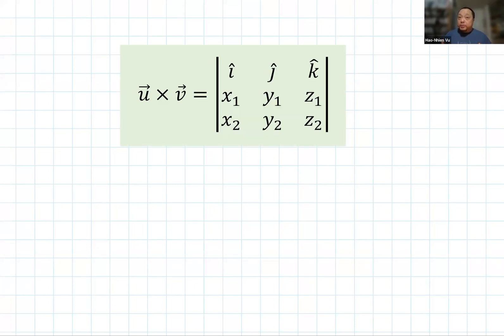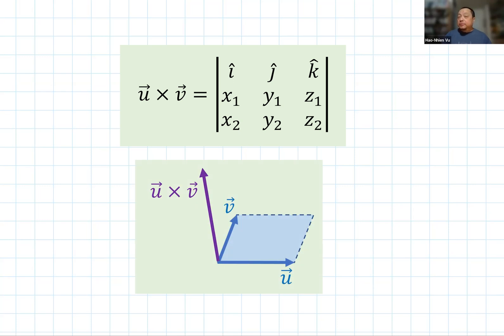Hi, in this video I'll show why the cross product of two vectors when defined as a determinant has a length that's equal to the area of the parallelogram formed by those two vectors.